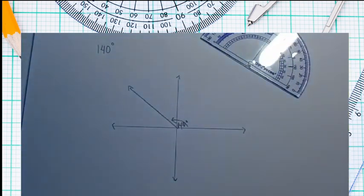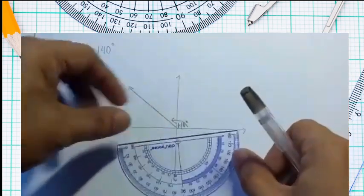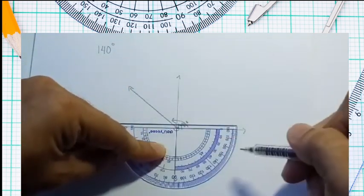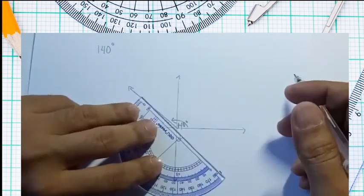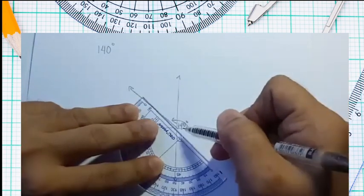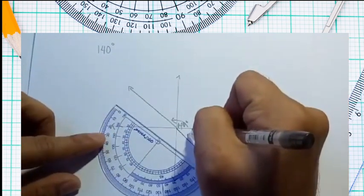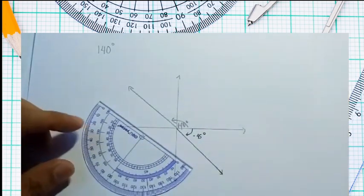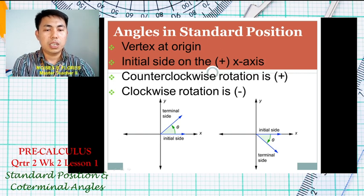What if the given angle is negative, such as negative 45 degrees? We rotate our protractor and locate 45 degrees in the clockwise direction. After marking it, we draw the terminal side from the origin. Do not forget to label it with its direction — this is negative 45 degrees in the clockwise direction.